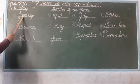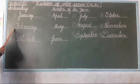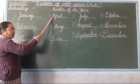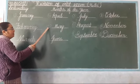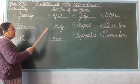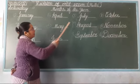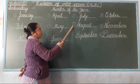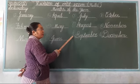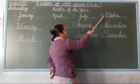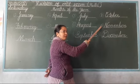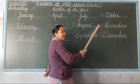1st — January. 2nd — February. 3rd — March. 4th — April. 5th — May. 6th — June. 7th — July. 8th — August. 9th — September. 10th — October. 11th — November. And 12th — December.